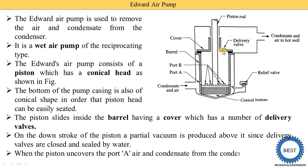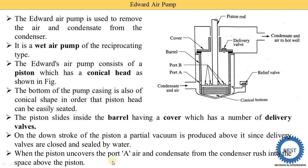When the piston uncovers port A — as the piston moves from the upward to downward stroke and reaches below port A, uncovering it — at that time, air and condensate from the condenser rush into the space above the piston. The condensate and air from the condenser enter the upper part above the piston.